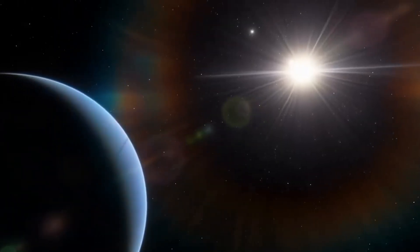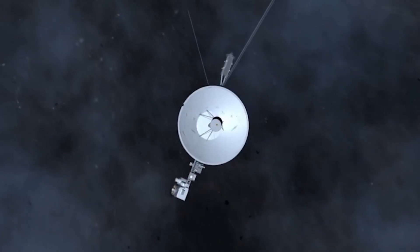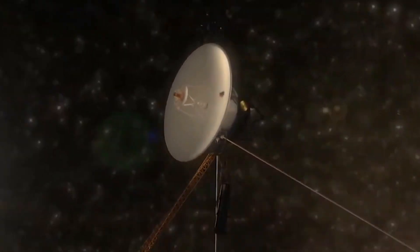These discoveries signified the end of the Voyager mission within our solar system. But rather than retire the spacecraft, NASA decided to push the limits and send both Voyager 1 and Voyager 2 outside our solar system. This was something that had never been done before.